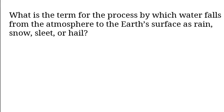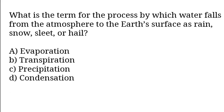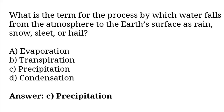What is the term for the process by which water falls from the atmosphere to the earth's surface as rain, snow, sleet, or hail? Options: Evaporation, transpiration, precipitation, condensation. So the correct answer is option C. Precipitation.